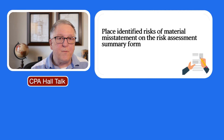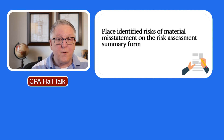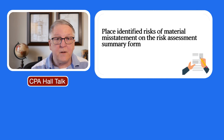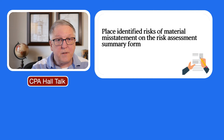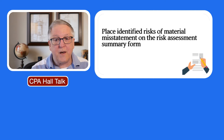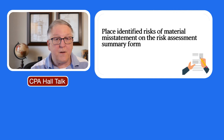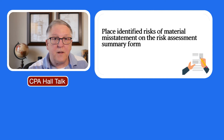Once we're done with information technology — we understand what's going on, who's doing what, and whether IT controls are sufficient — we step back and consider whether there is a risk of material misstatement. If there is, like always, we're going to put that on the risk assessment summary form. If there's not, we're good and can move on to other parts of the audit engagement.